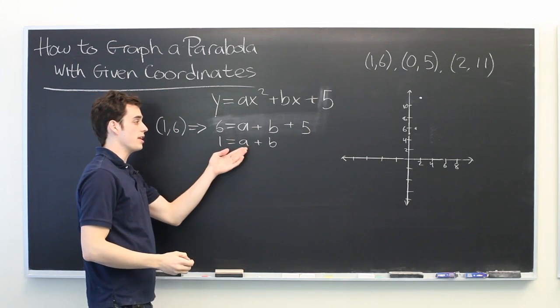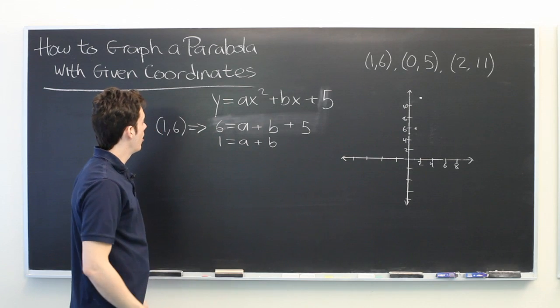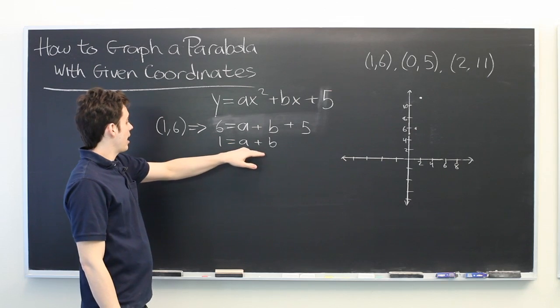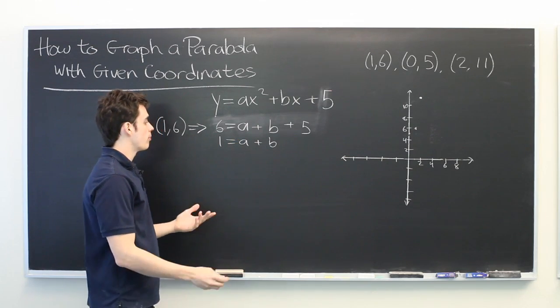Well, this is not enough information to uniquely determine these coefficients. We could have a is 1 and b is 0, or a is 7 and b is negative 6. So we need more information.